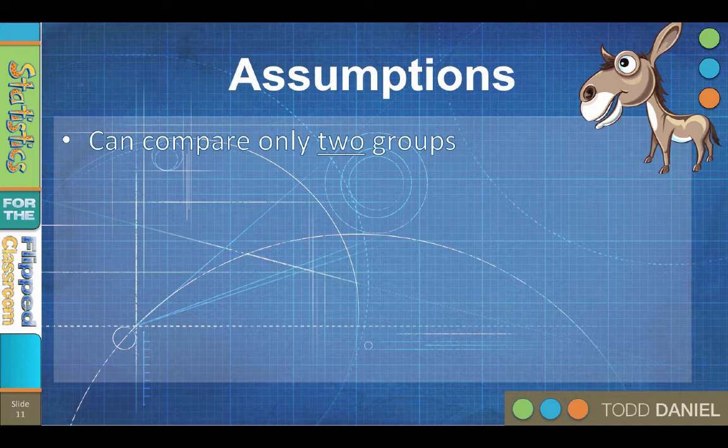The number of thy groups shall be two. The number of thy groups shall not be three. And if it is, thou shalt use a one-way ANOVA. Nor shall the numbers of thy groups be one, unless thou immediately proceedest to two, only two groups for a t-test.